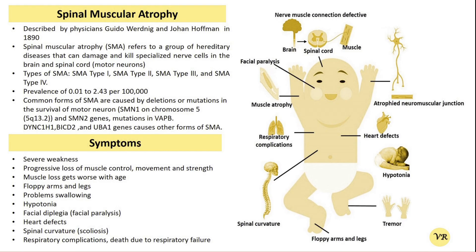Muscle weakness often progresses over time as motor neurons are lost; muscles shrink and become thinner. Fine tremors in the hands and fingers may occur, especially in infants. Difficulty with movements such as crawling, standing, walking, or breathing also occurs.